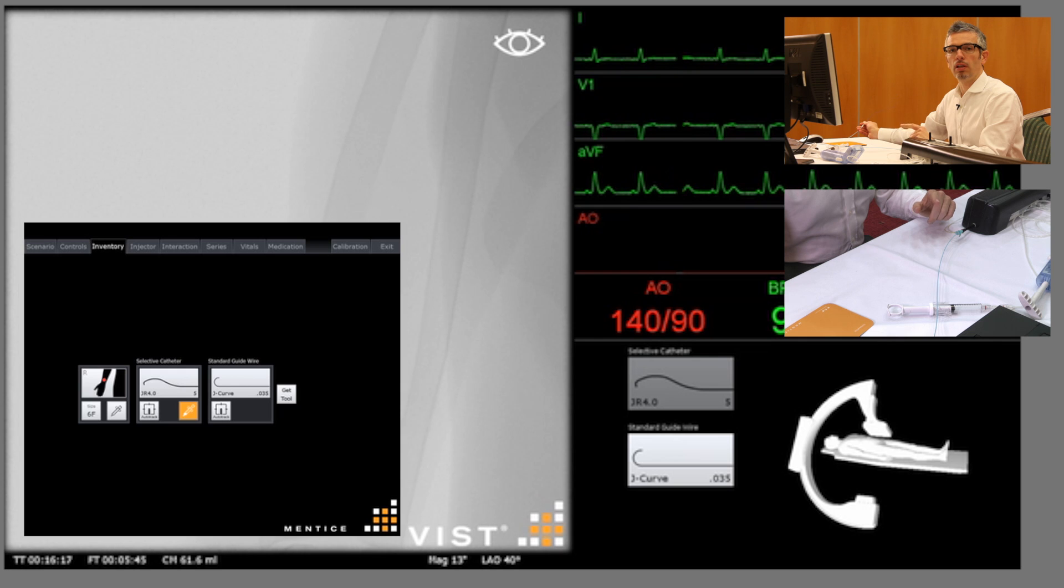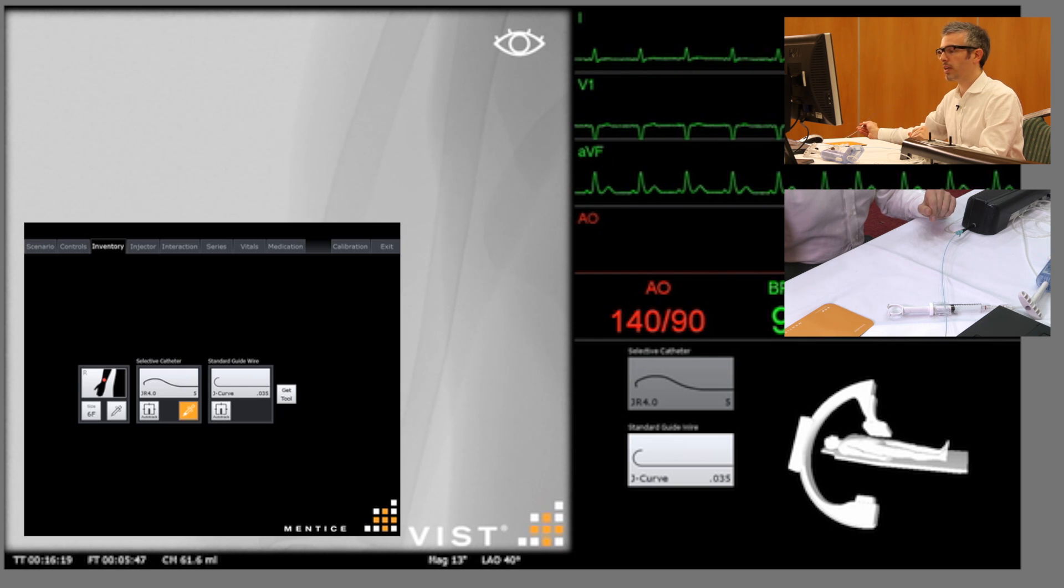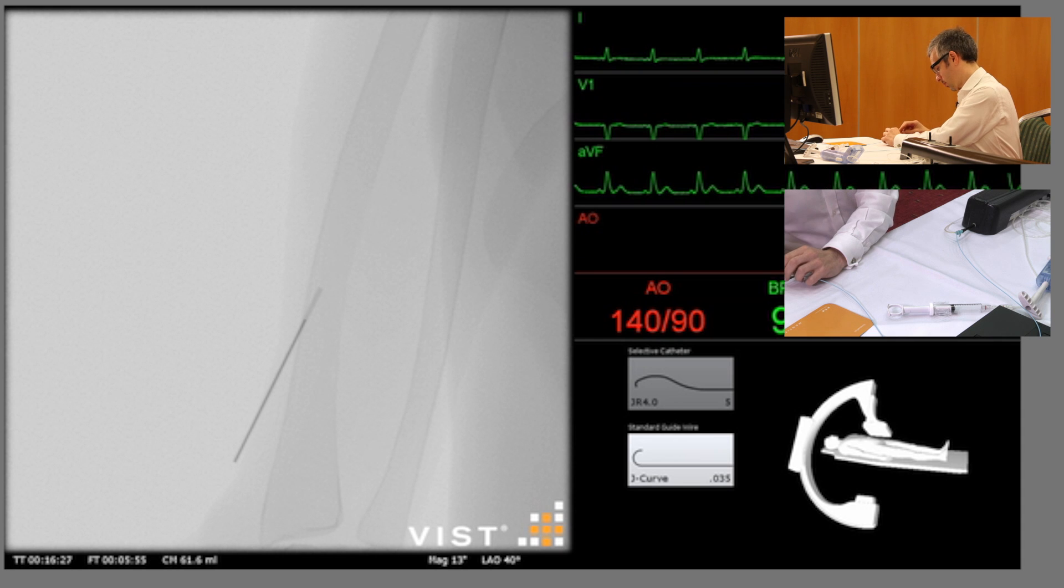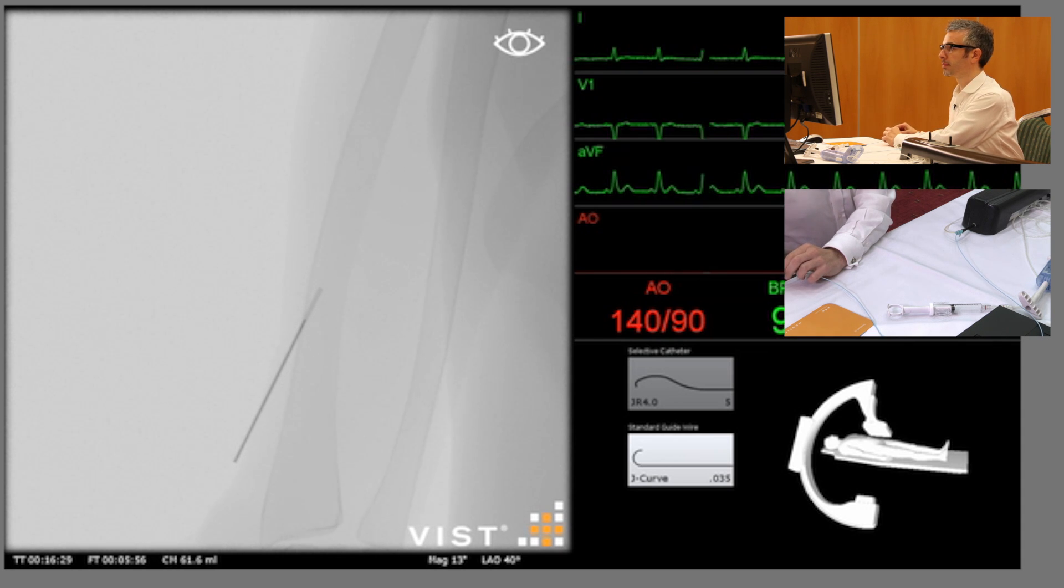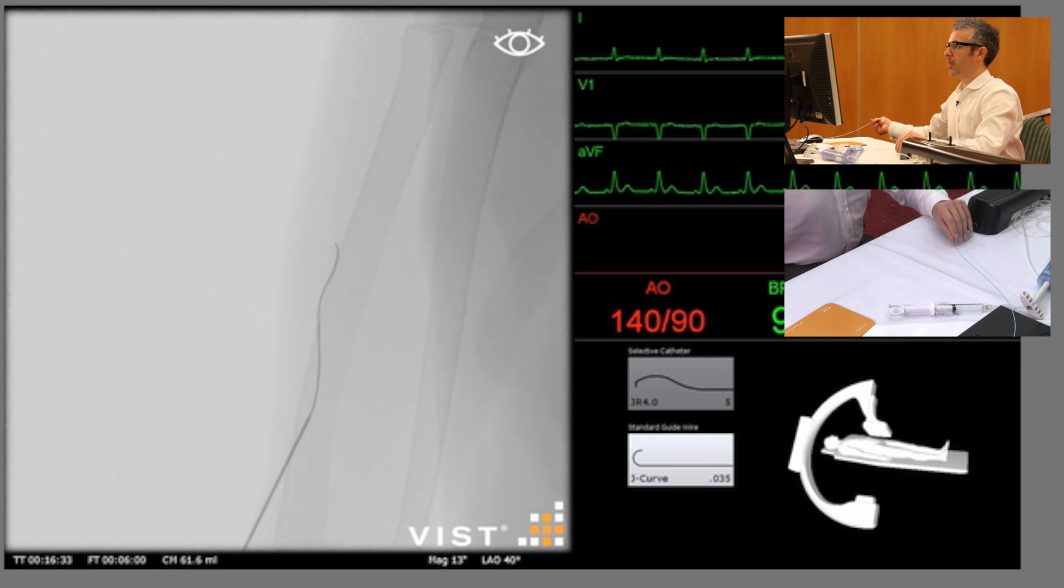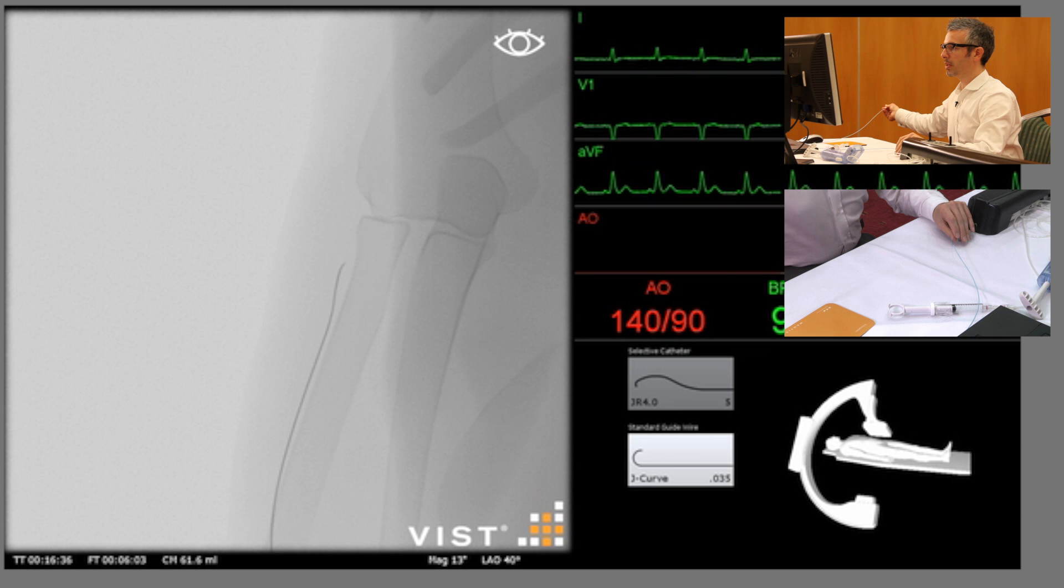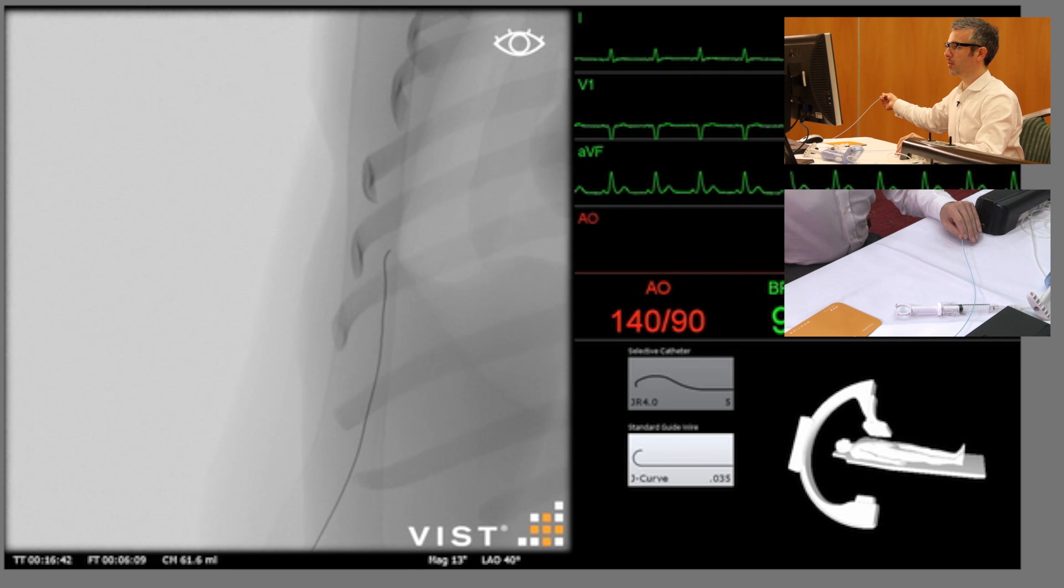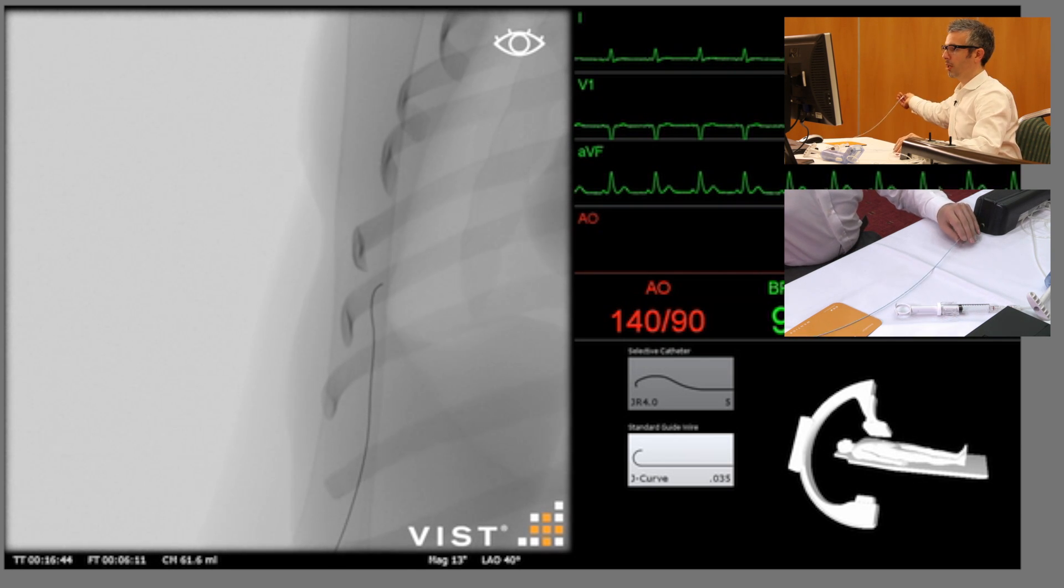To start with we've got our 035 guide wire sat inside the radial artery sheath. As we advance the guide wire we should have a mental picture in our minds of where the wire should be heading. So if we see it deviating from that pathway or if we meet any physical resistance then we know that we need to redirect the wire. In this case you can see that the wire is moving smoothly up the artery.